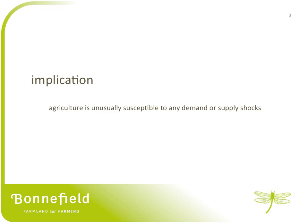The inelasticity of both supply and demand means that agriculture is unusually susceptible to shocks to the system. And as it turns out, the world is facing serious shocks to both the supply and demand side of agricultural products, and these shocks are going to have long-term impacts on the prices for all agricultural goods and services, including farmland.